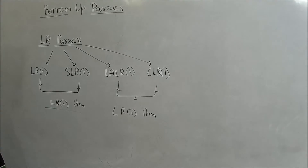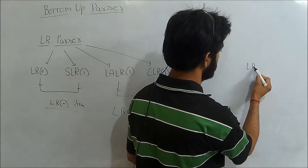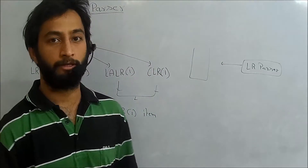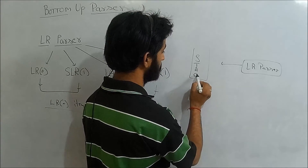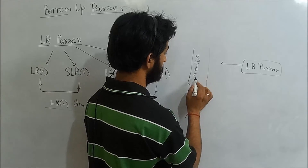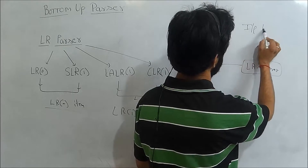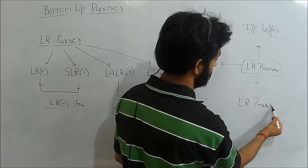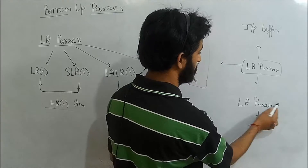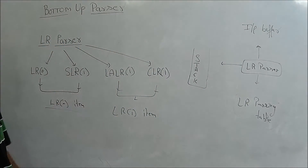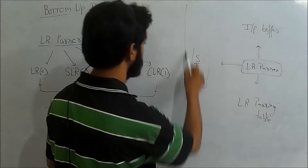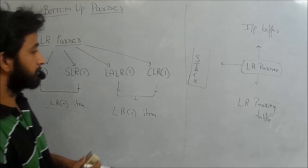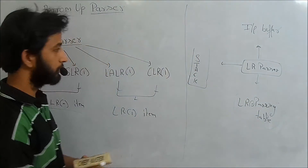Before going into the detail of the LR0 parser, let us discuss the diagram. An LR parser is an algorithm that requires three components: a stack, an input buffer, and an LR parsing table. This structure is the same for all four parser types. The only difference is that for the LR0 parser, we require an LR0 parsing table.